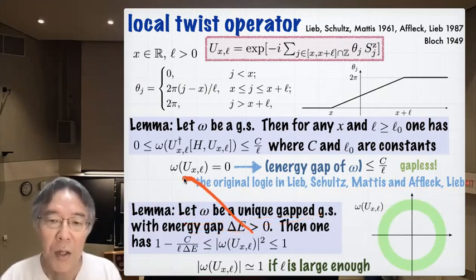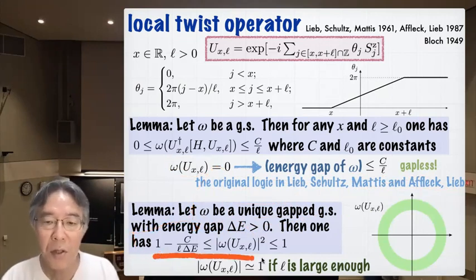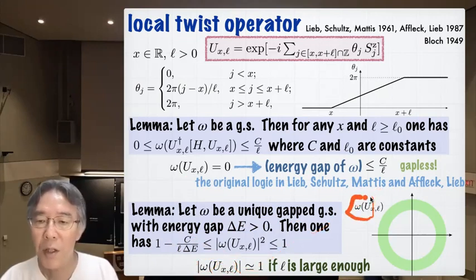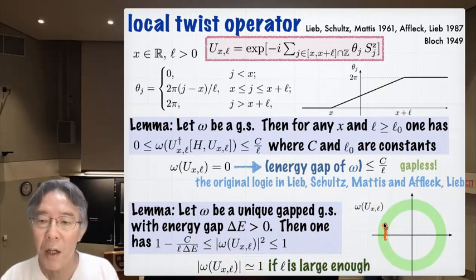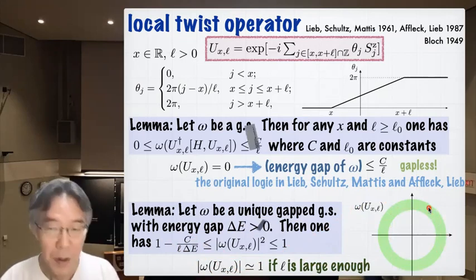Here I want to revert this logic and first assume that omega is a unique gap ground state with energy gap delta E. Then this identity omega(U) = 0 cannot be valid — because that would make omega gapless. So omega(U) is non-zero. Moreover, an easy computation shows this inequality: when l is sufficiently large, the absolute value of omega(U) is almost one. So this expectation value can take values only in a ring-shaped region in the complex plane.